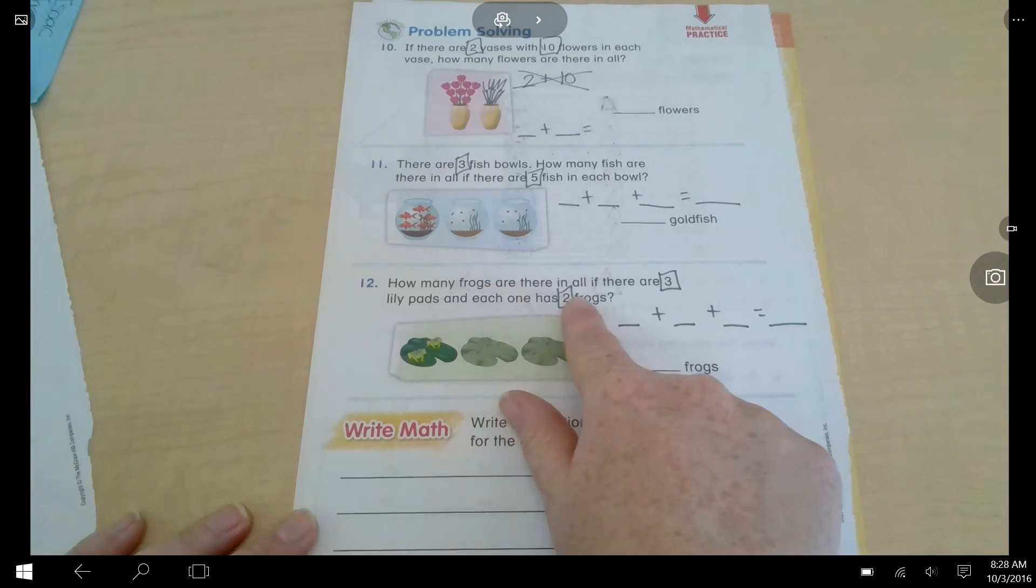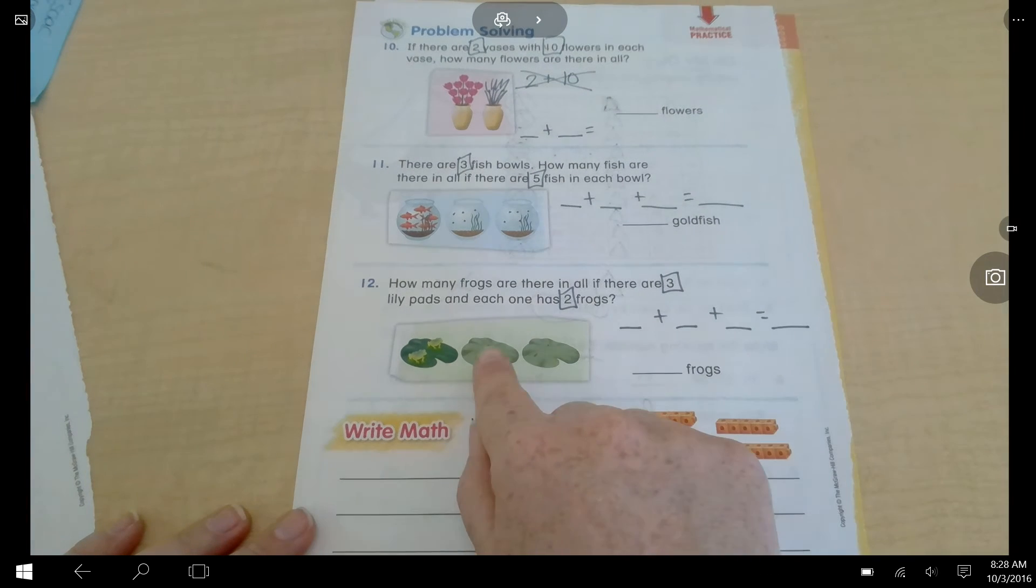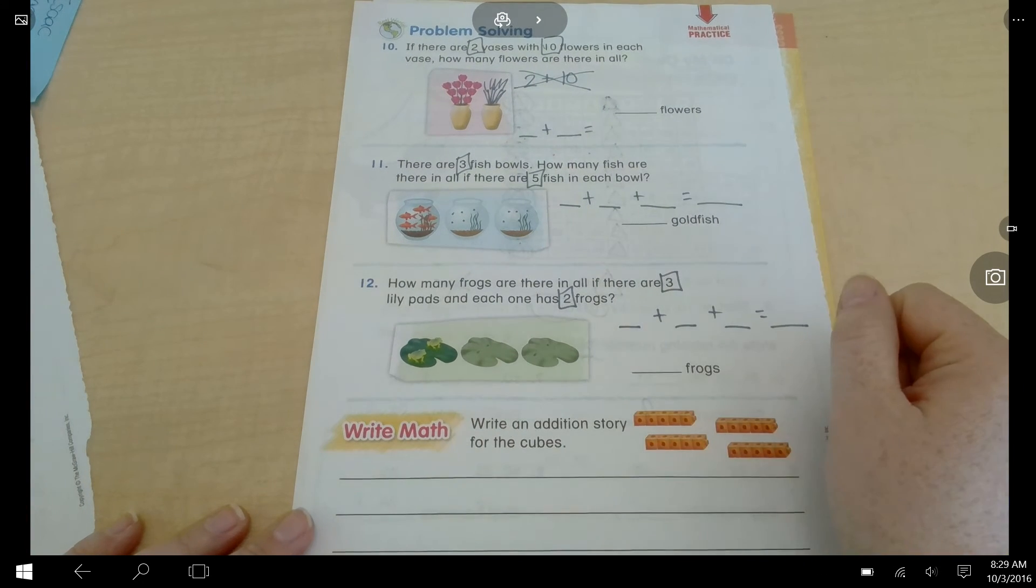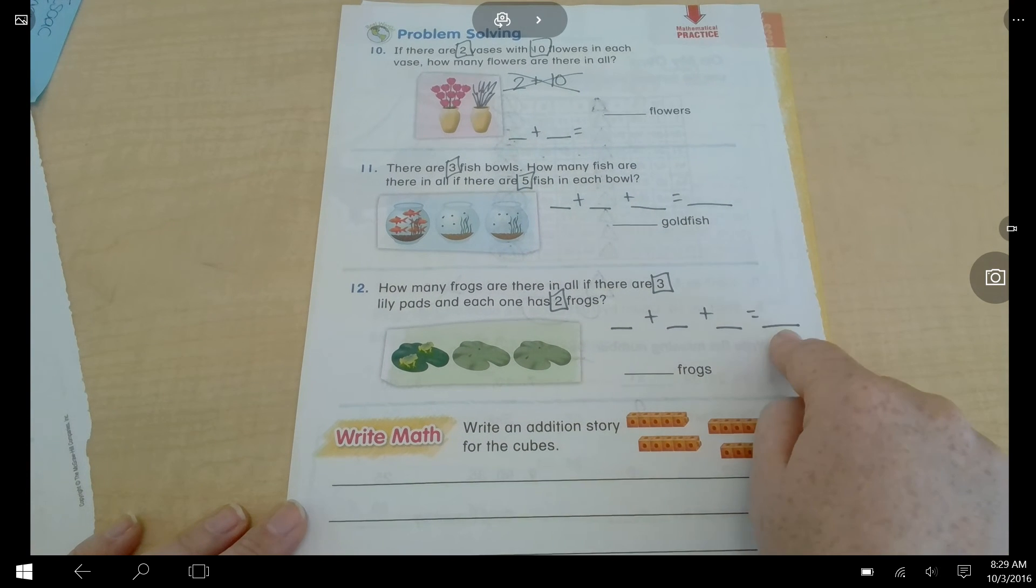Your last problem. How many frogs are there in all if there are three lily pads and each one has two frogs? Three lily pads. I drew two dots on each of the other lily pads to help me. It's repeated addition, so I'm going to do 2 plus 2 plus 2 equals.